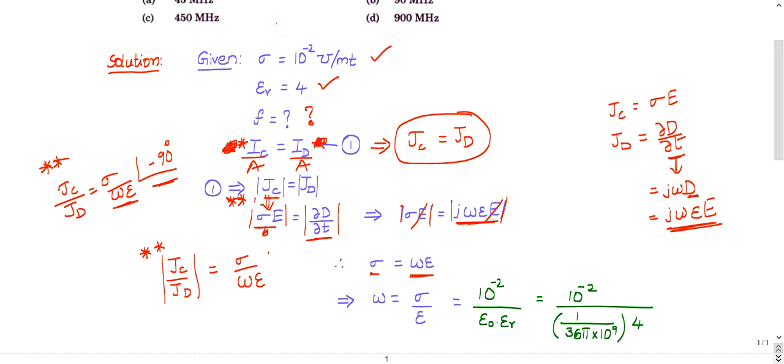Magnitude is sigma by omega epsilon. He is clearly given that jc equal to jd. So this is equal to 1. The ratio is 1. So sigma equal to omega epsilon directly you can conclude. If you can remember this, this is only one formula.